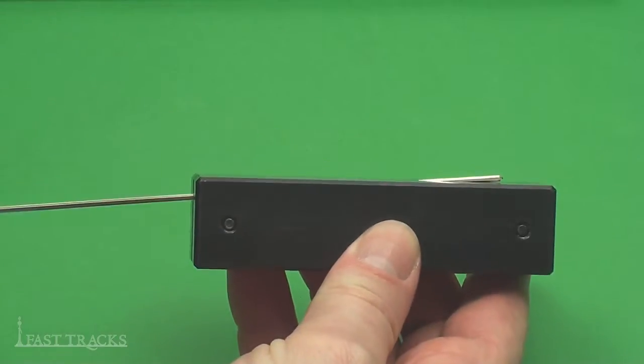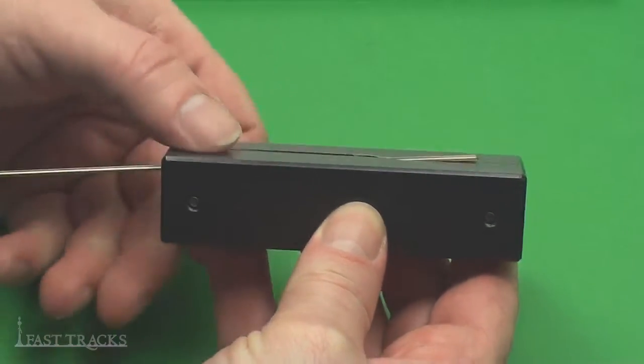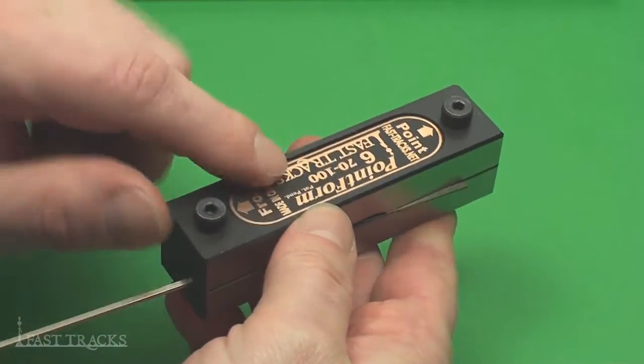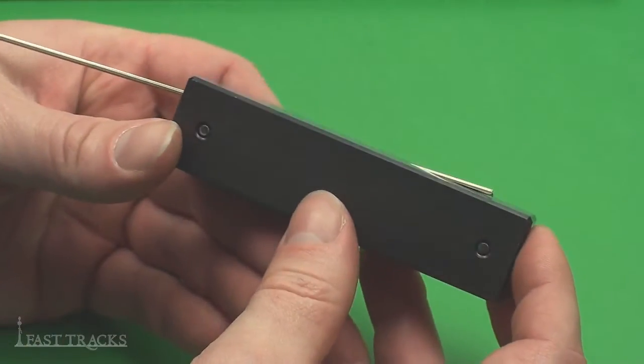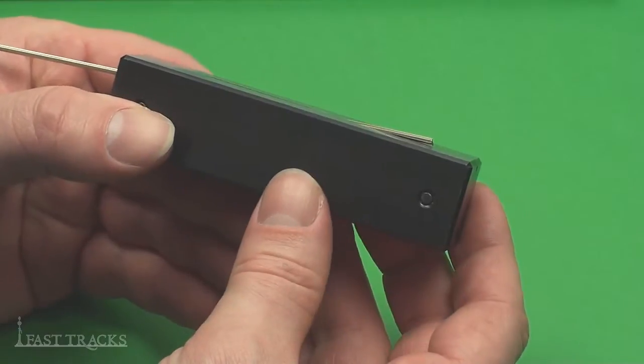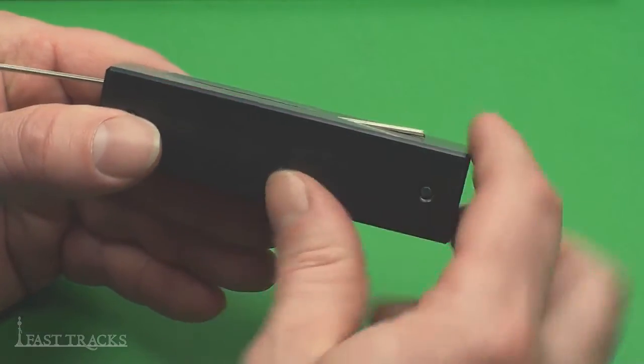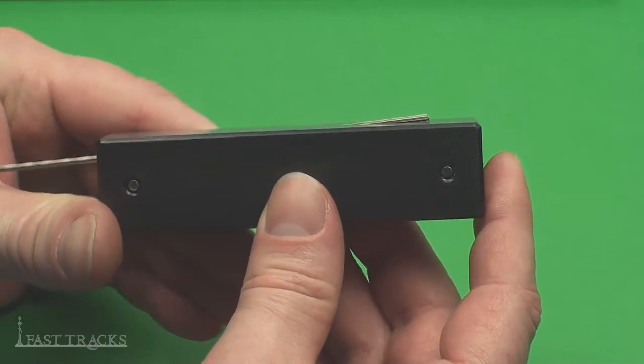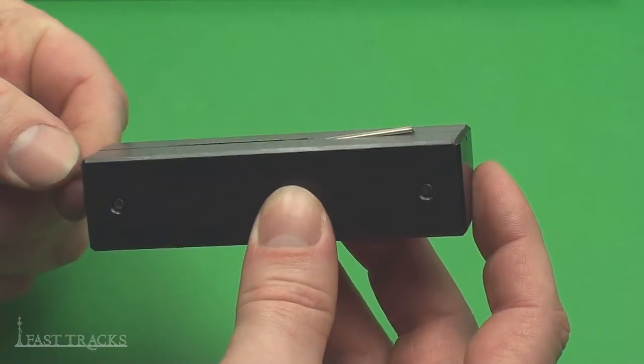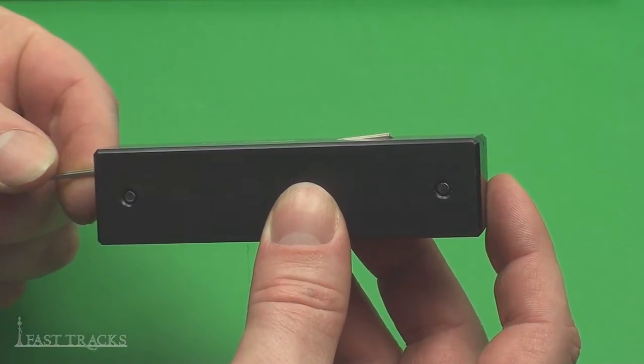Now you can see where that's sitting on an angle in the tool and that angle is a number six frog point. Getting the rail located in the tool is quite critical. You can see here where the entire rail is sticking out the end there and that's actually too far out. Where you want the rail is about there.